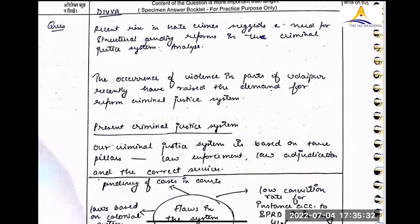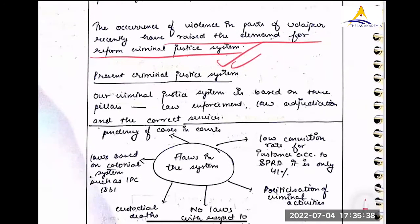The occurrence of violence in parts of Udaipur average the demand. Present criminal justice system. Our criminal justice system is based on three pillars. Law enforcement. You could have just drawn like this. Law enforcement,